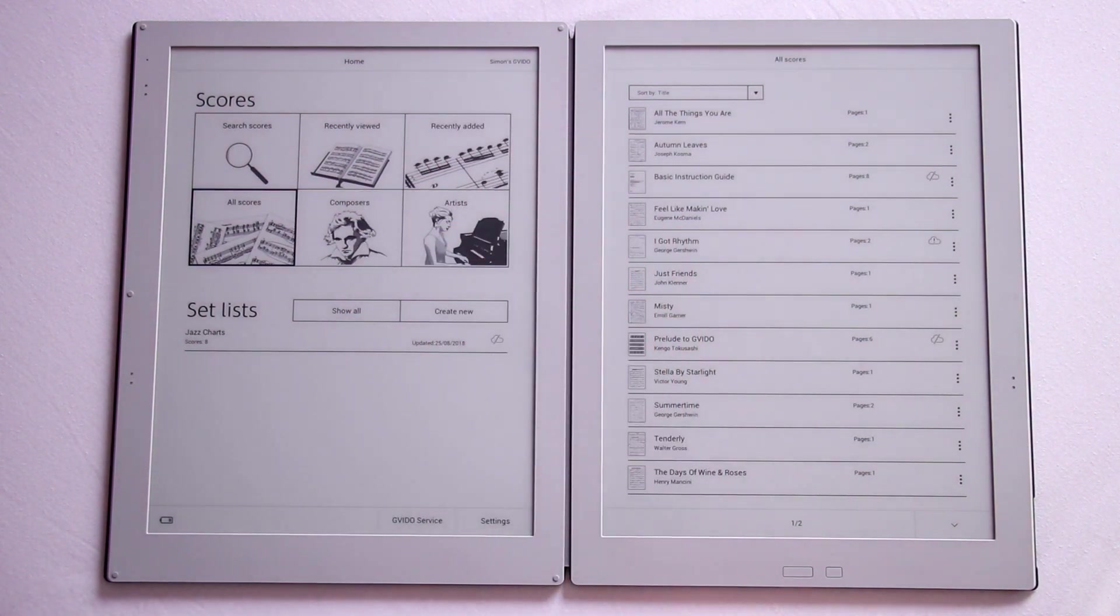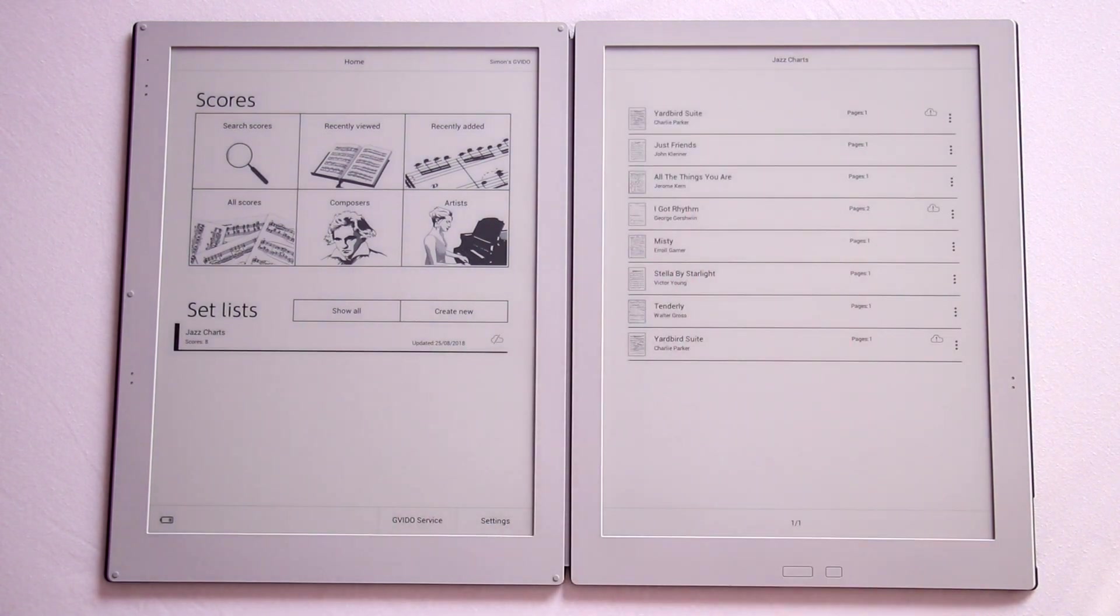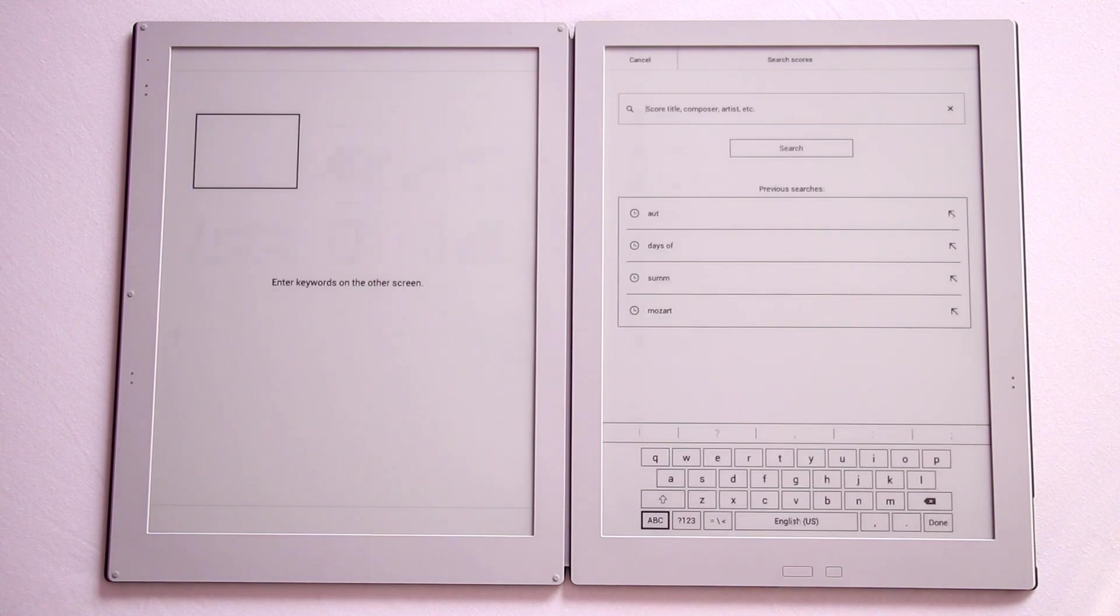You can also create set lists to group certain music together. If I open up this little jazz chart set list I made, you can see all the songs open here. You can also just search for any sheet music on the device.